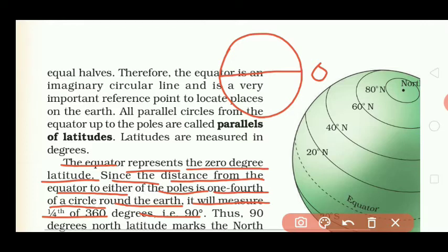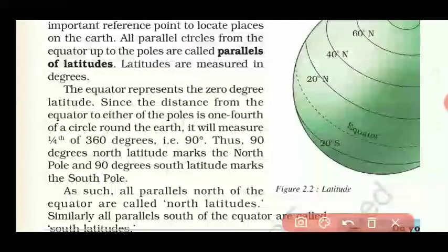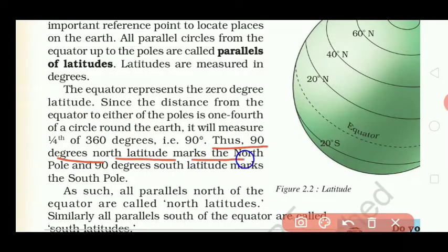अगर हम center से, equator के center से 90 degree का angle लगाएं तो यहां से इसकी दूरी 90 degree पर हो जाएगी — और North तक हो जाएगी, और यह ऐसे ही South में भी 90 degree हो जाएगी। Thus, 90 degrees North latitude marks the North Pole and 90 degrees South latitude marks the South Pole — तो इस तरह ऊपर भी 90 degree latitude North Pole में और 90 degree ही South Pole में mark की जाती हैं।